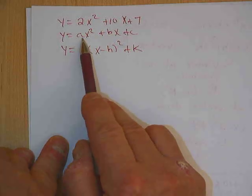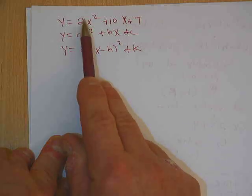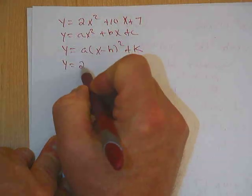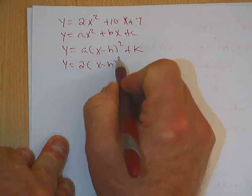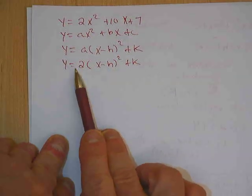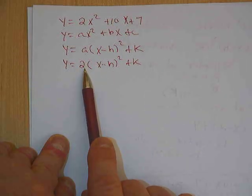First thing I want to point out is the a in the standard form is the same as the a in the vertex form. So you can automatically take this number right here and rewrite your equation with that value of a in place. Very straightforward. Whatever the a is in the standard form is the a in the vertex form.